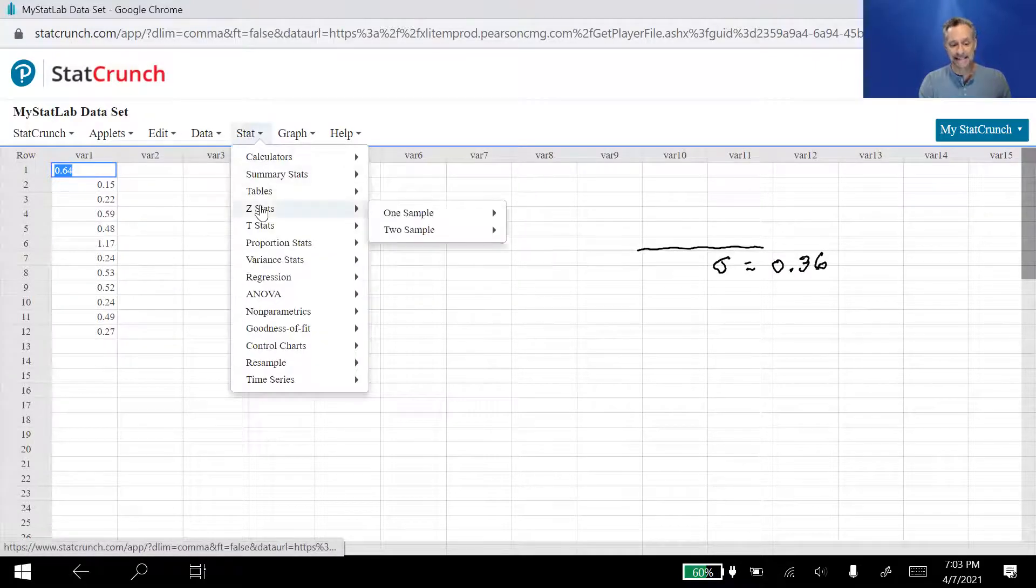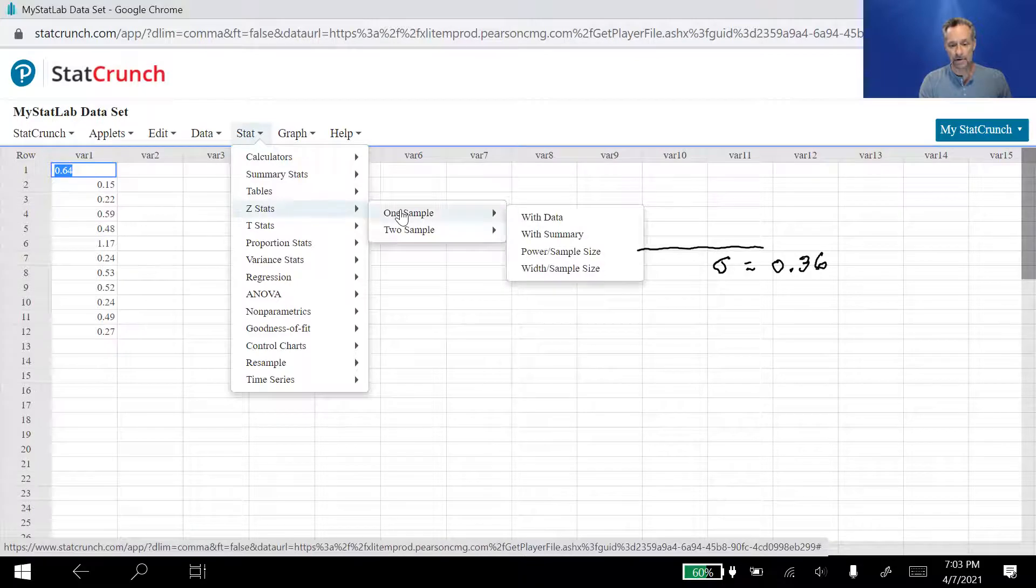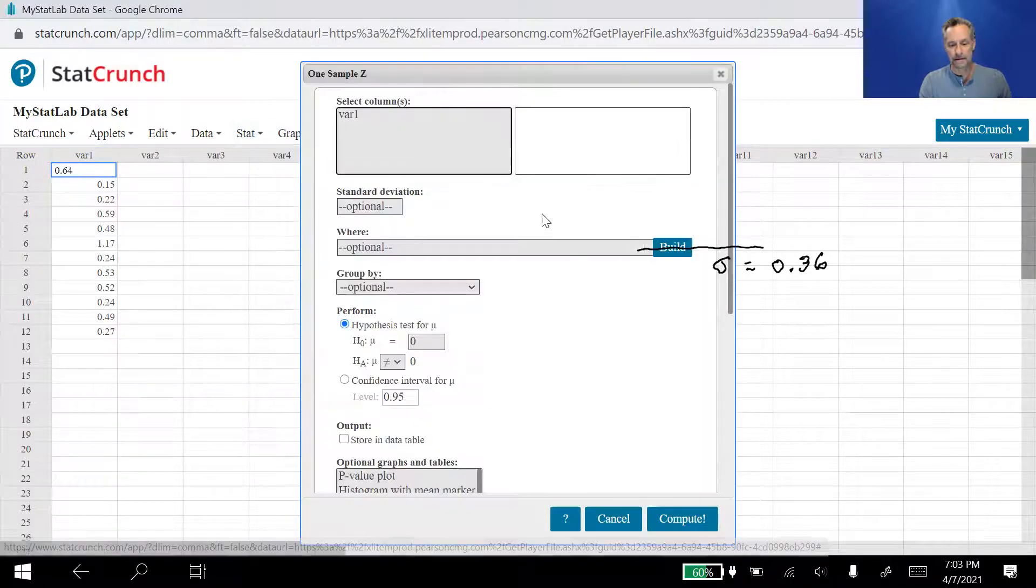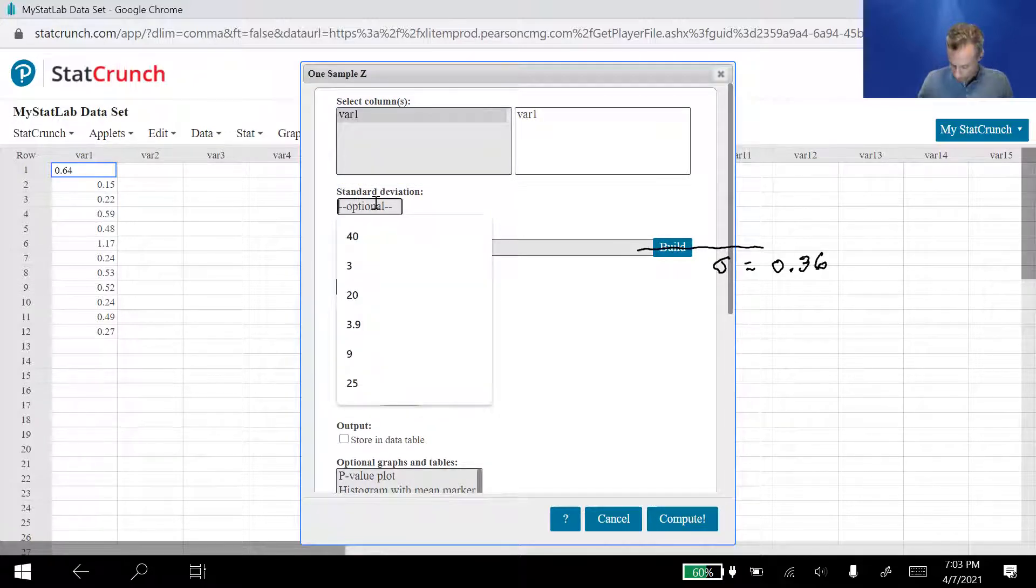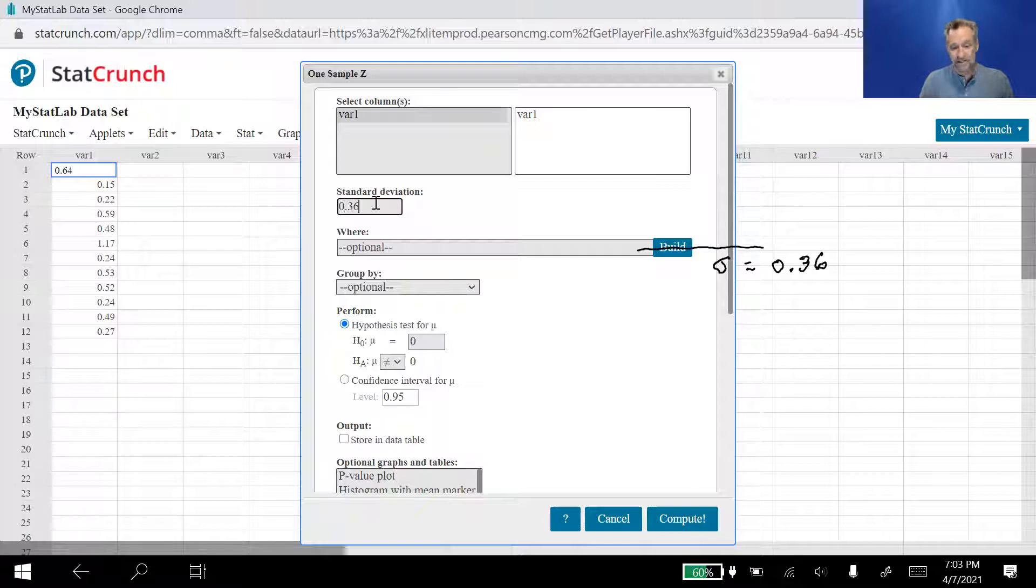It comes right up for us. And here's how we run the test. We go to Stat, Z Stats, one sample with data. The data is in variable one, so pick that. The standard deviation, 0.36. Now here you have to be careful because it says it's optional. If you don't put the population standard deviation there, it's going to calculate the sample standard deviation, put it in itself, and you're going to get the wrong answer.